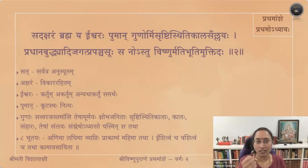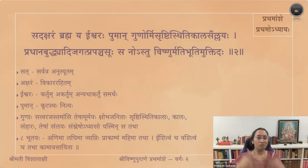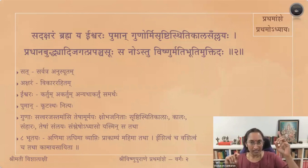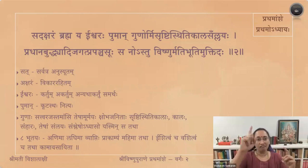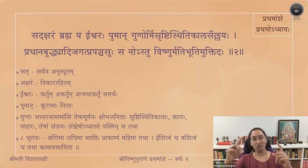Next adjective: Eeshwaraha — from the word eeshate, meaning controlling. Kartum akartum anyatakartum va yaha samarthaha bhavati sa eva eeshwaraha — one who has the power to do, not do, or do otherwise. His power comes from Maya Shakti: creation-shakti or samhara-shakti. When akshara-sat-brahma takes up Maya, he becomes Ishwara. When there is only one Brahman, there is no second vastu to control. The name Ishwara applies only when there is Maya or Maya-karyam to control.